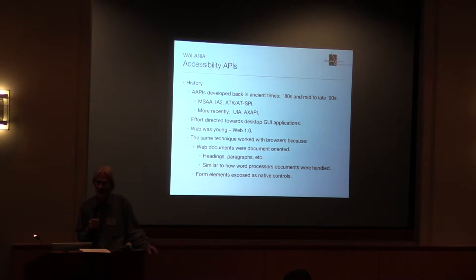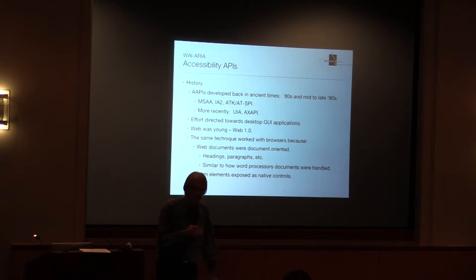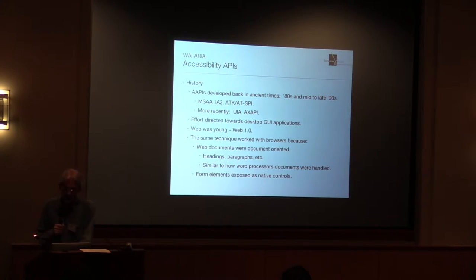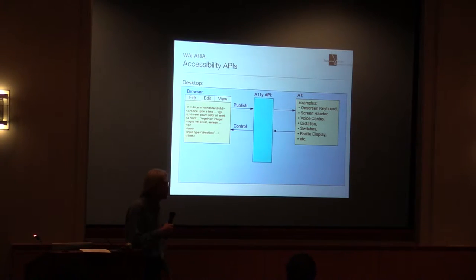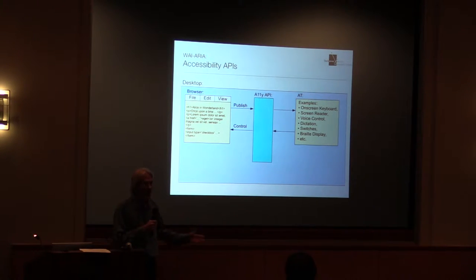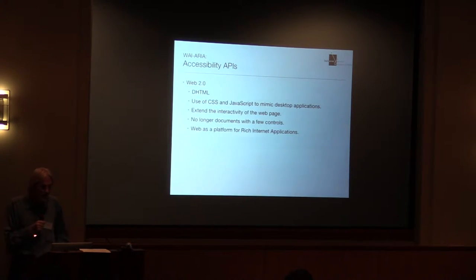This scheme worked with web documents back then. You could treat a web document the same way you treated a word processor. Form elements were expressed as native controls. But then the world changed — along came Web 2.0 and dynamic HTML, whereupon you could use CSS and JavaScript to mimic desktop applications. You could build full-blown tree controls, tab lists, and so on — using divs and spans with the correct CSS and event handlers.